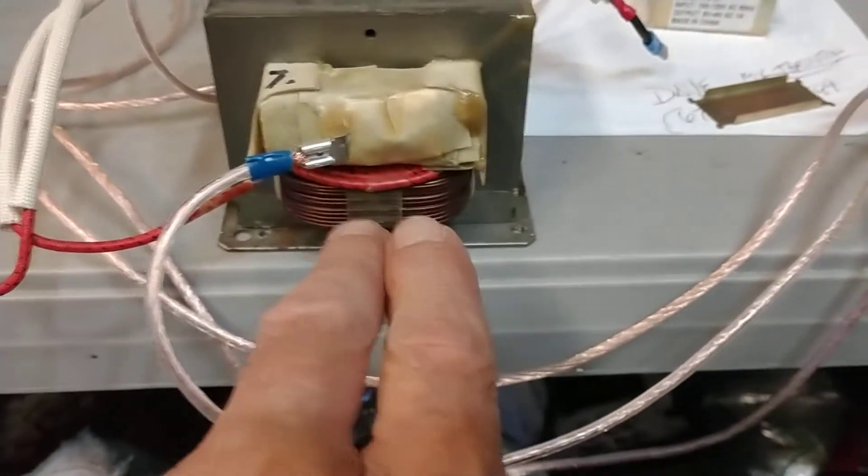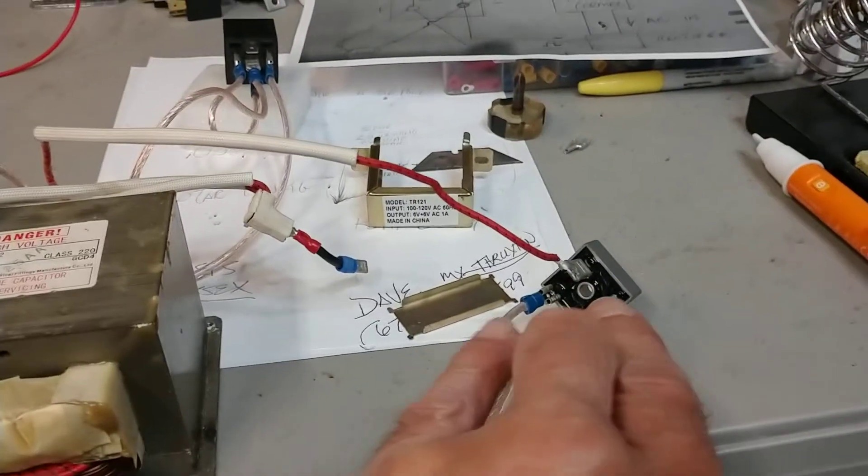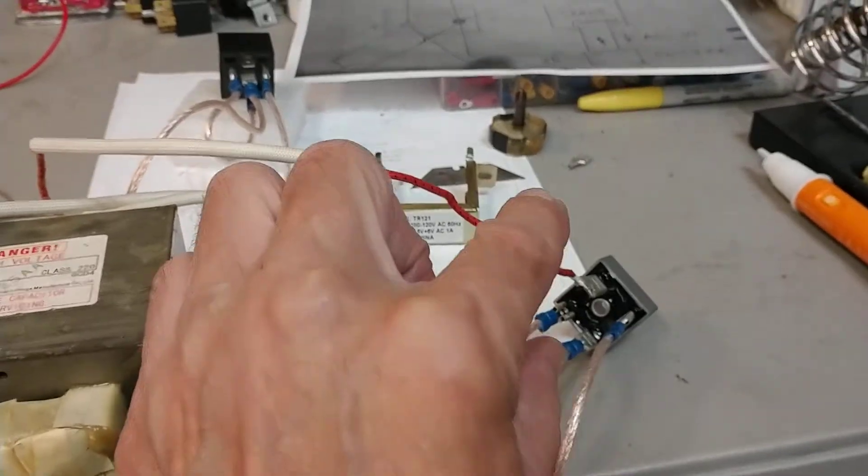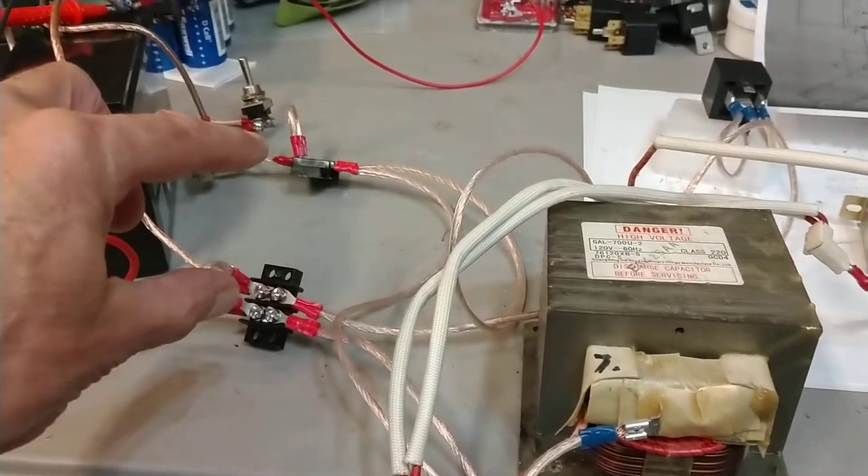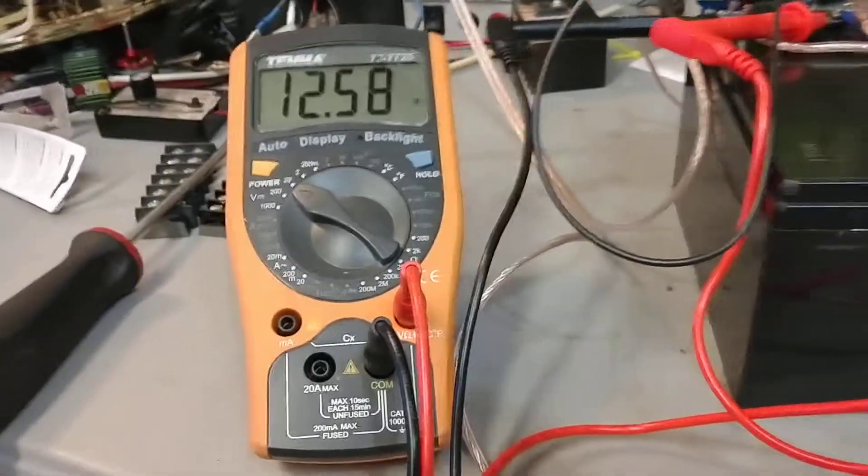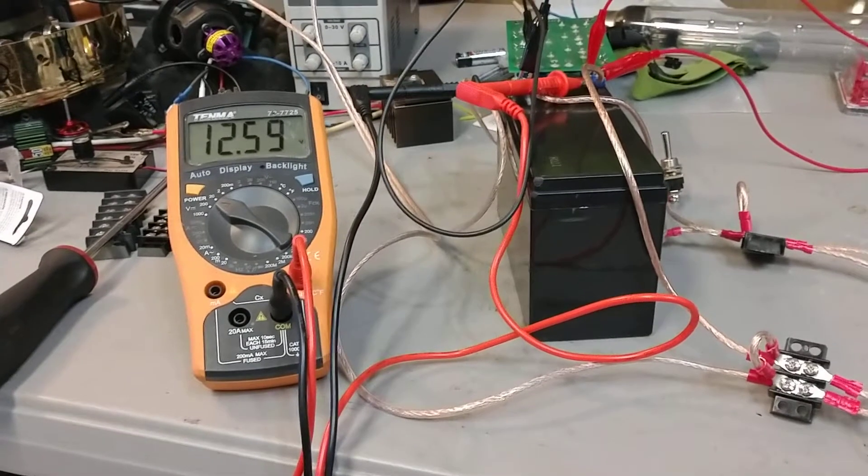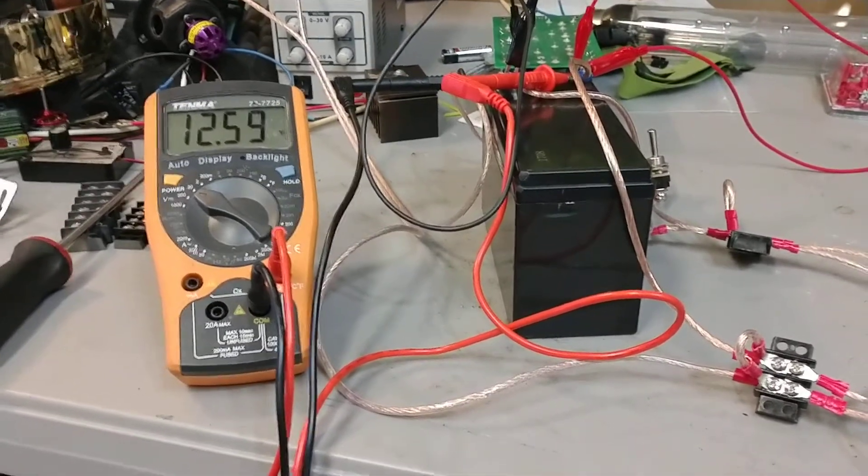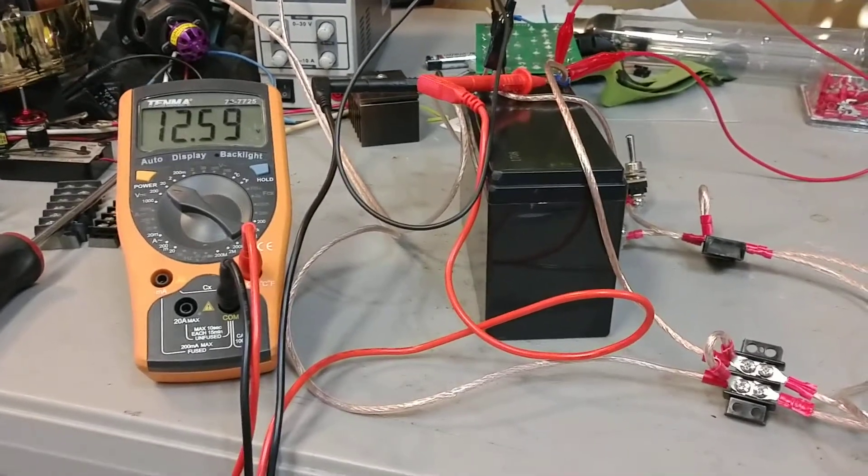Now I'm running DC power into my primary here on this transformer. My AC power coming out is going into my rectifier. The DC coming out of the rectifier is going into my positive and negative. What we're attempting to do is keep this battery fully charged. It's charging itself with an EMF spike at this point.